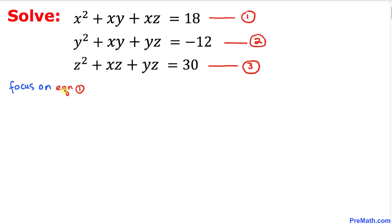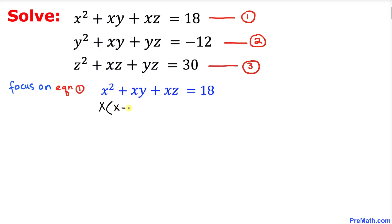Now let's focus on equation one. As we can see on the left-hand side, x is in common, so I can factor x out. In the parentheses we get x plus y plus z, equal to 18.